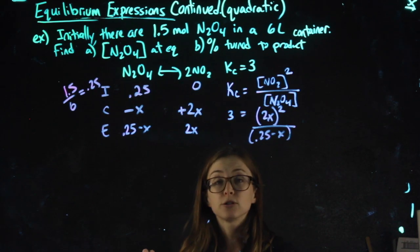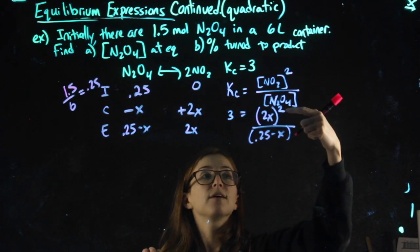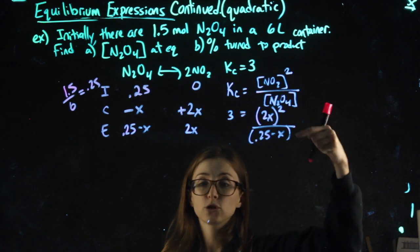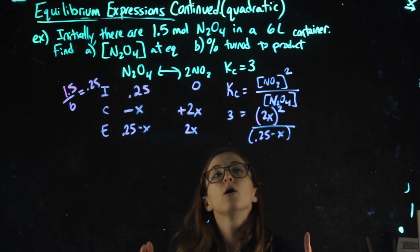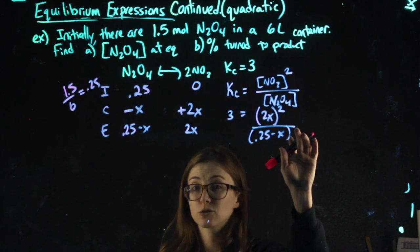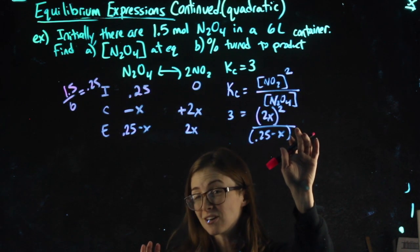At this point, on the problems you've done so far, you're used to having both the numerator and the denominator be squared so you could square root both sides. We can't do that here because our denominator is not squared. So square root is not an option.